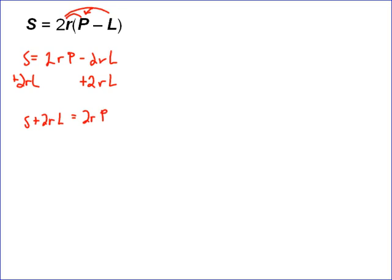I want to solve for p, so I need to divide both sides by the 2r. So I divide both sides by 2r, and I get p equals s plus 2rl all over 2r.